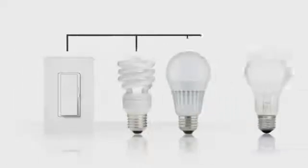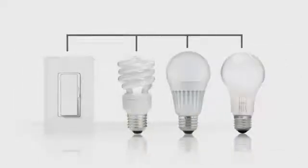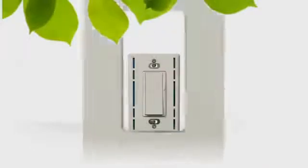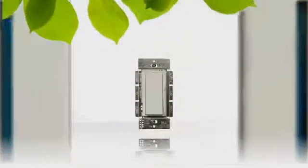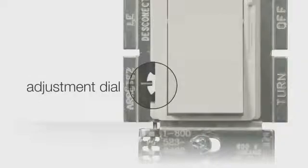You can even mix and match light source types on one dimmer. In order to control a variety of different light sources, C.L dimmers are equipped with an adjustment dial. The adjustment dial will help you set the bottom of the dimming range for your particular bulbs. Here's how.